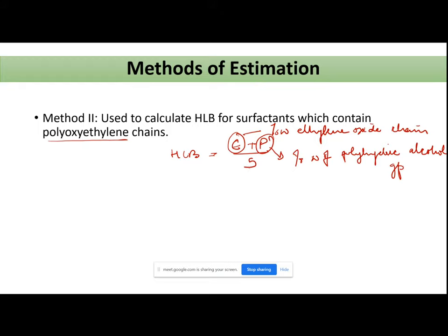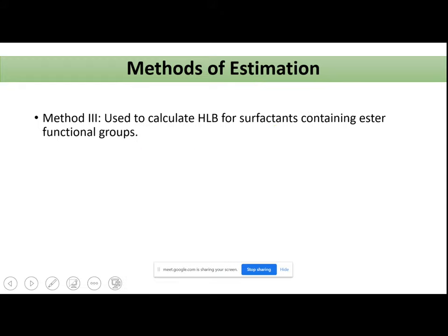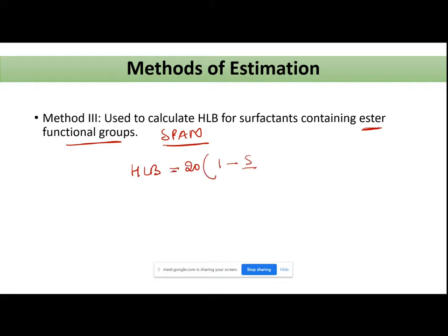Method 3 is used to calculate the HLB for surfactants which contain an ester group. Examples that fall here are spans. For spans you calculate HLB using: HLB = 20 × (1 − S/A), where S is your saponification number and A is your acid number.